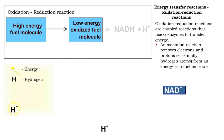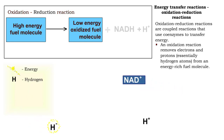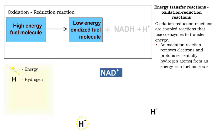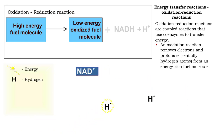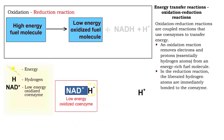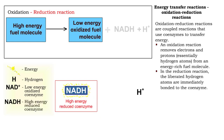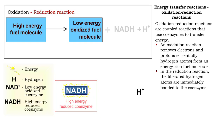Oxidation reactions liberate energy in the form of hydrogen atoms from high-energy fuel molecules. Using a coenzyme like NAD+, reduction reactions transfer the liberated energy to the reduced coenzyme NADH.